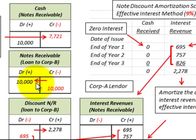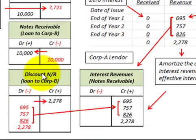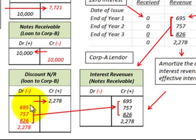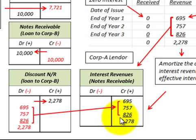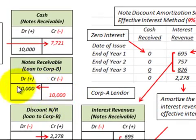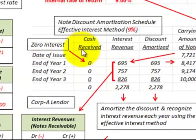Since we have a discount on the notes receivable, we set up a contra account — the discount on notes receivable — which reduces the notes receivable balance. We credit it for the total discount of $2,278, representing the difference between face value and present value at the beginning of the note. We then amortize and reduce this discount based on our amortization schedule until the full $2,278 is cancelled out. We also credit interest revenue based on the amortization schedule, up to the total amount of $2,278 at the end of the third year. When the note matures, we credit out the notes receivable and debit cash for $10,000.